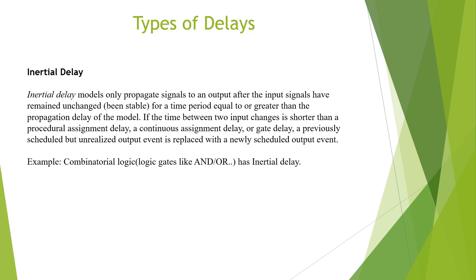The first kind of delay is the inertial delay. Inertial delay models only propagate signals to an output after the input signals have remained unchanged or been stable for a time period equal to or greater than the propagation delay of the model. If the time between two input changes is shorter than a procedural assignment delay, a continuous assignment delay, or a gate delay, a previously scheduled but unrealized output event is replaced with a newly scheduled output event.